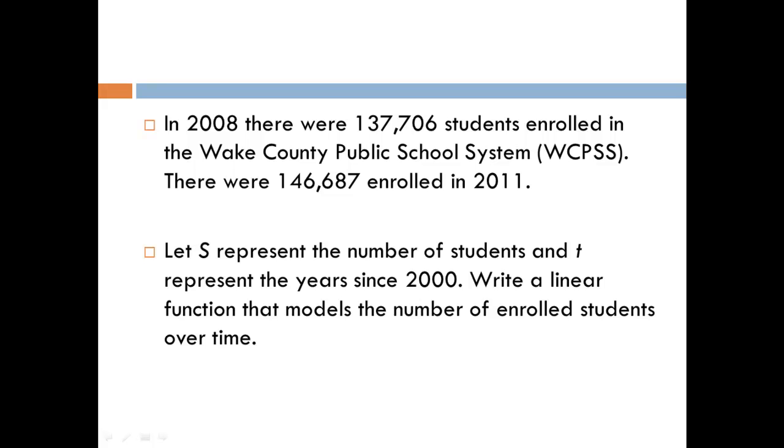We also have, for each of these years, the number of students enrolled. When we think of a function, we have to think of the dependent variable. In this case, the number of students would depend on which year you're looking at. So the number of students is dependent, and the year since 2000 would be independent. We can write these as ordered pairs.